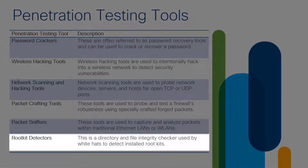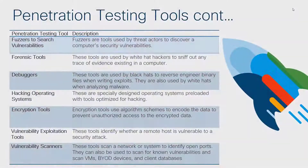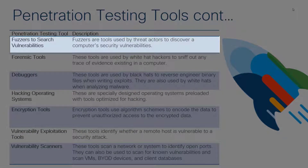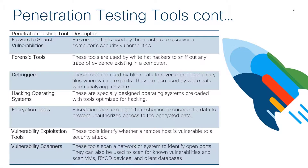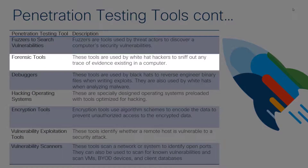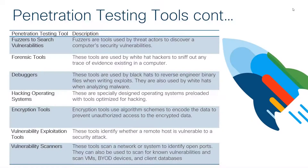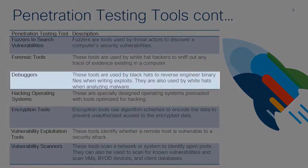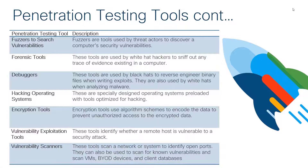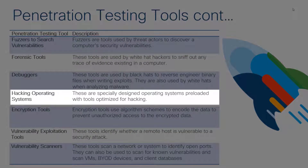Rootkit detectors perform a directory and file integrity check, looking for things that have been maliciously modified or are maliciously active — as a threat actor, you'd want to evade these. Fuzzers submit invalid, unexpected, or random data to try to crash a system and break through a vulnerability. Forensics tools can recover data and pull back deleted files, whether someone wants them recovered or not. Debuggers help reverse engineer binary files when writing exploits. Hacking operating systems like Backtrack and Kali are specially designed OSes pre-loaded with penetration testing tools.